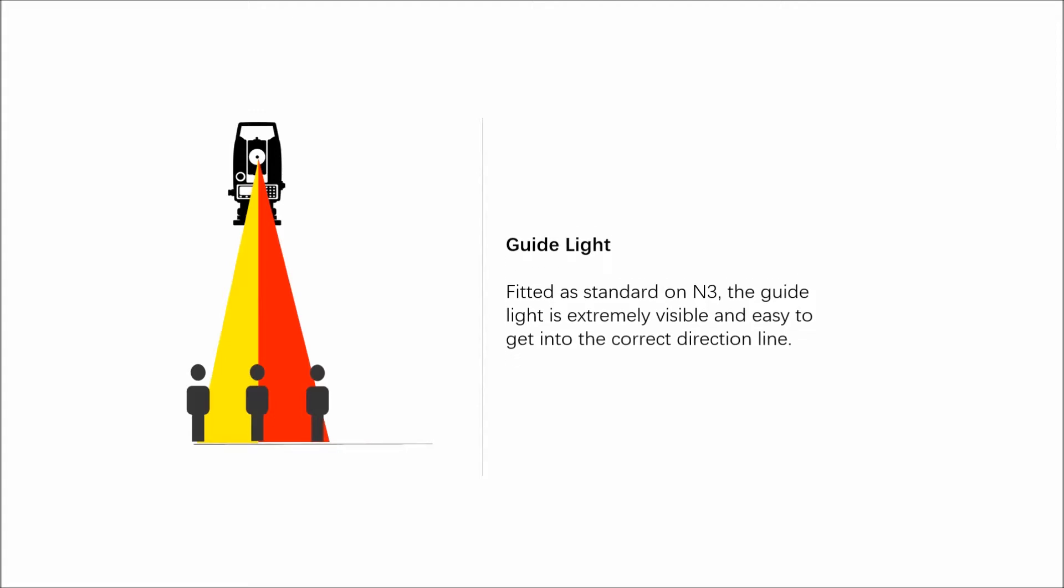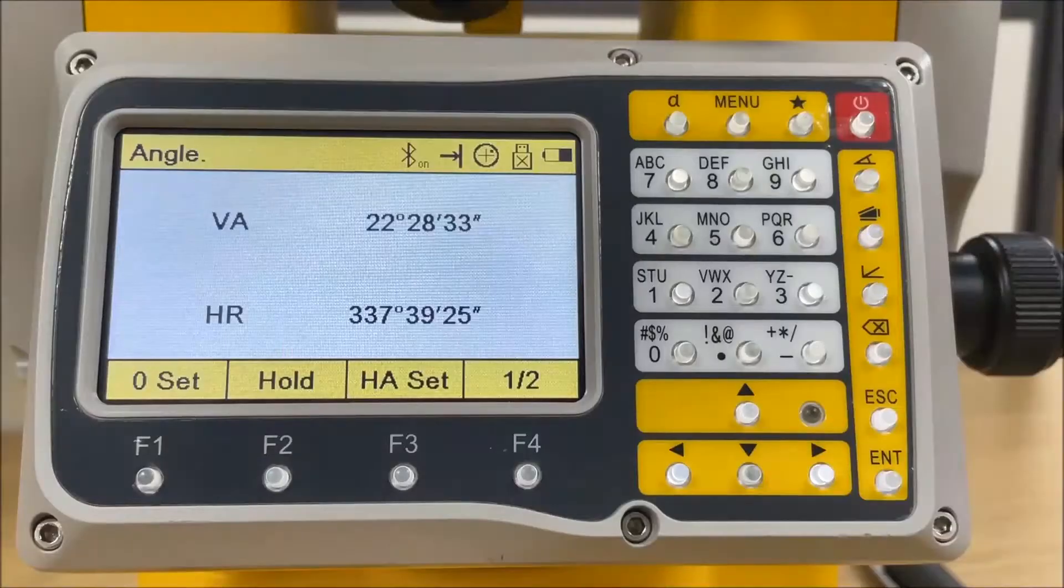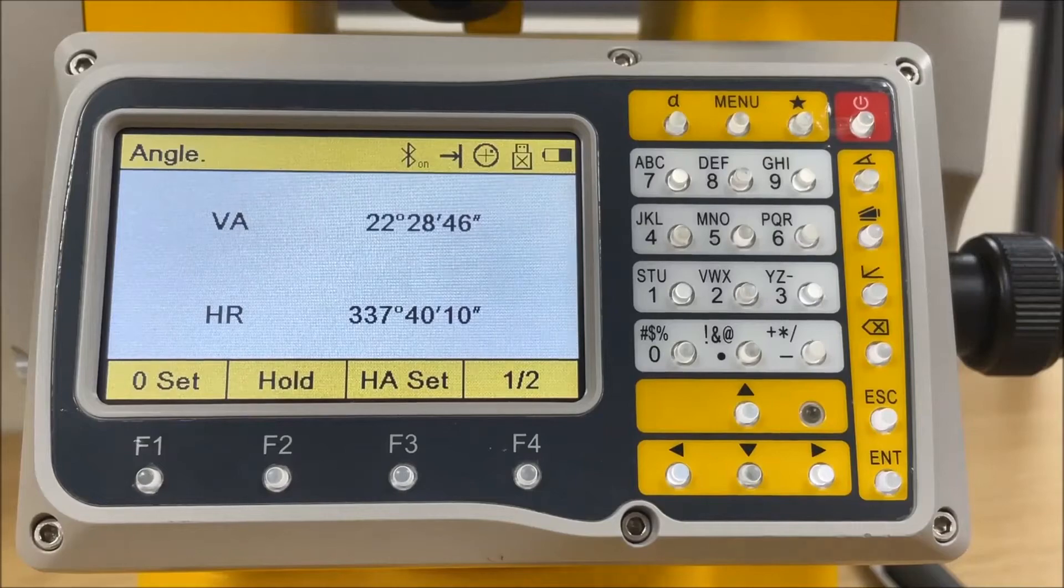When entering the program, we can open the guide light. The person at the prism can be guided by the flashing lights directly to the line of sight. The light points are visible up to a distance of maximum 200 meters. This is useful when setting out points.